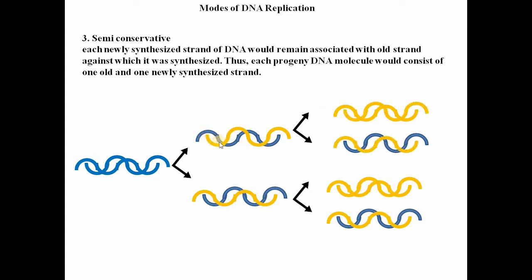In the first generation of semi-conservative replication, two hybrid DNA molecules are produced — each containing one old strand and one new strand. So 100% hybrid DNA is formed. In the second generation, there are two hybrid DNA molecules and two fully new DNA molecules — meaning 50% hybrid DNA and 50% new DNA.